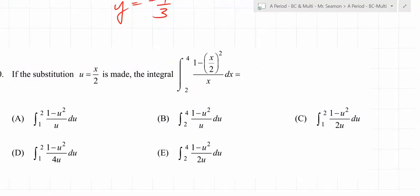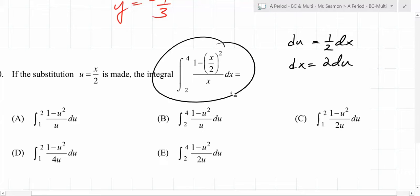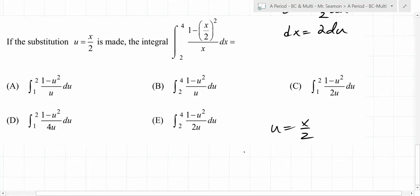So first of all, what is du going to be? 1 half dx, correct? So what does dx equal? 2 du. You have to make all of these substitutions. First you have to change the limits of integration. These are x values. The new limits of integration, we know that u equals x over 2. We're looking at the numbers 4 and 2 getting thrown into there for the x values. So the integral now goes from 1 to 2. You can get rid of these immediately.